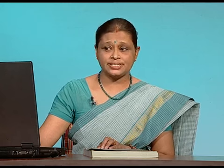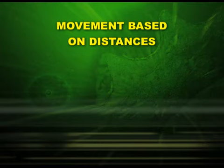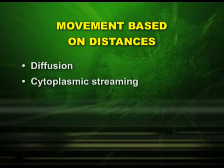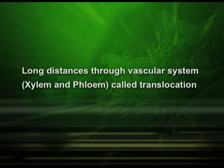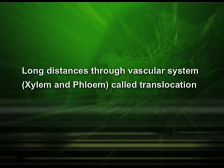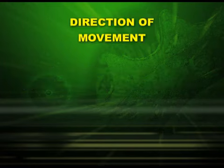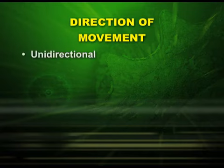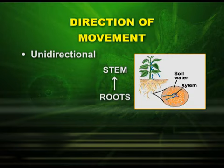Let us first see the short distances. The first type of short distance transport is diffusion and the second one is cytoplasmic streaming. In long distances, transport takes place through the vascular system — xylem and phloem — and this is called translocation. In the direction of movement, we have two types: unidirectional, that is from roots to stem.